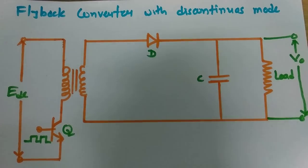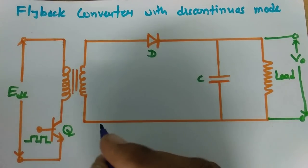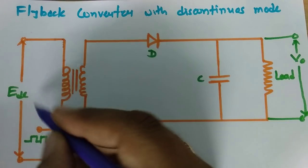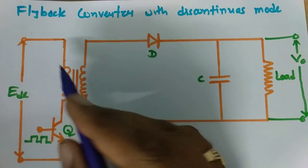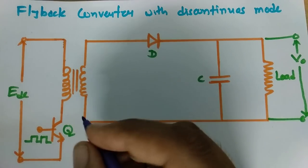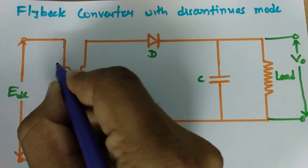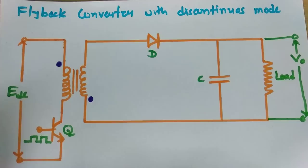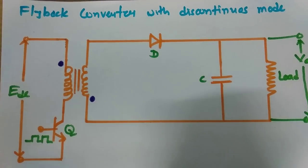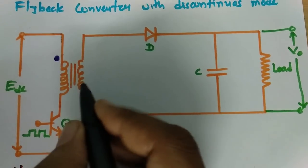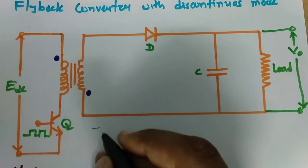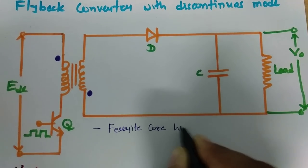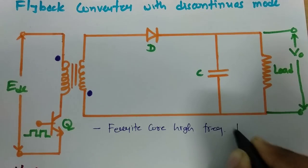First of all, I will be talking about the transformer used in this flyback converter. The winding of this transformer is not in the same direction. We use a high frequency ferrite core transformer here. So this transformer is a ferrite core high frequency transformer.